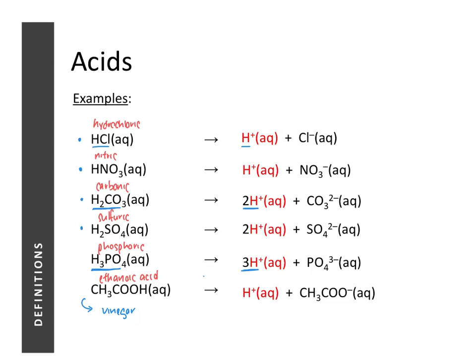Acids where one unit produces one unit of hydrogen ions are called monobasic acids. Acids where one unit produces two units of hydrogen ions are called dibasic acids. Acids where one unit produces three units of hydrogen ions are called tribasic acids. In a later lesson we'll learn something interesting about dibasic and tribasic acids, but for now remember that acids are further classified as monobasic, dibasic, or tribasic.